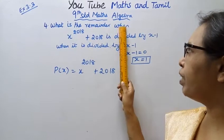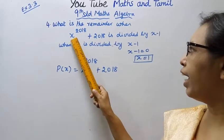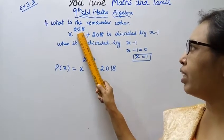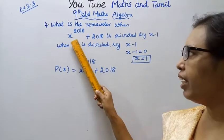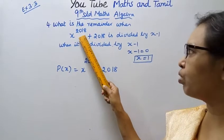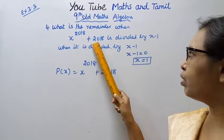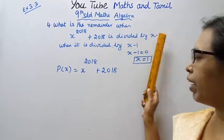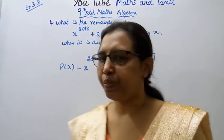What is the remainder when x power 2018 plus 2018 is divided by x minus 1?